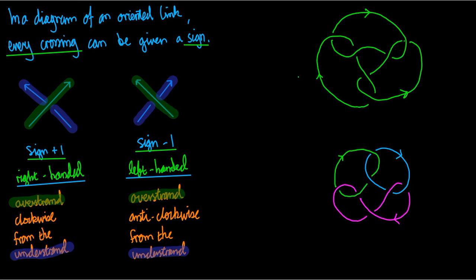Let's have a go at the example on the top right. My first step is always the following: I pick a component of the link, start at the arrow, and travel around the link in that direction. Every time I go through a crossing, I draw an arrow coming out the other side. I go around the component, through a crossing, draw the arrow coming out, keep going, through a crossing, arrow coming out, and I do that on all the components.